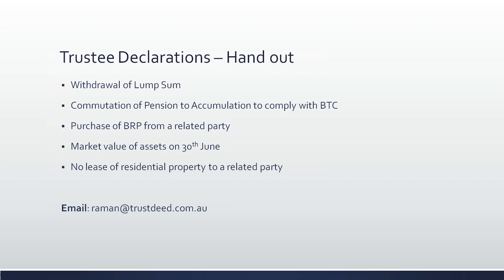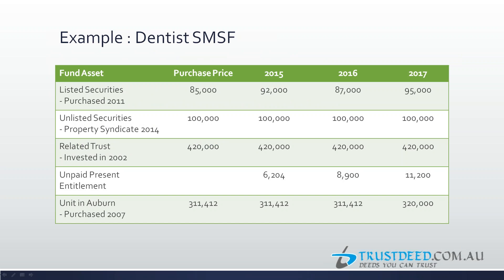Let's look at a complex example — a dentist's super fund. It has some listed securities purchased in 2011, contributions to a property syndicate with other dentist friends, a related trust (a fixed unit trust) that owns the surgery, some unpaid present entitlements from that trust sitting in receivables as a fund asset, and a unit in Auburn purchased in 2007. As an auditor going in, listed securities can be valued relatively easily, though manual checks on whether valuations are correctly inserted may still be needed.